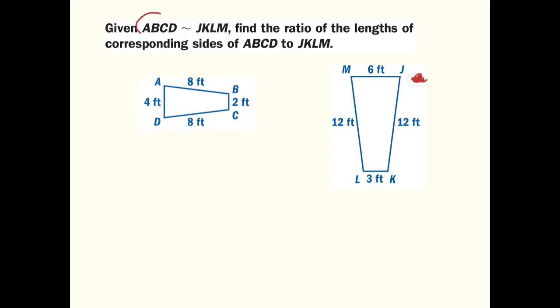We're given that these two shapes here, this one and this one, are similar. I'm going to write a little similarity squiggle there. We're going to find the ratio of the corresponding sides from ABCD to JKLM.